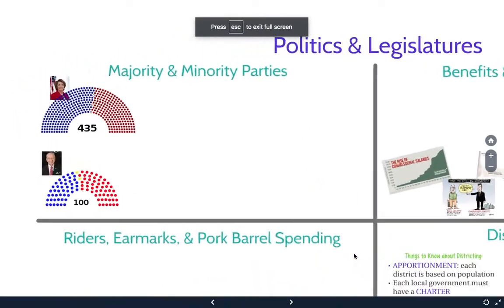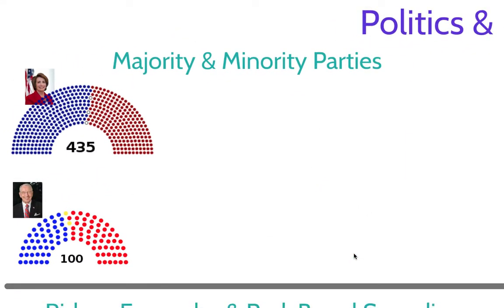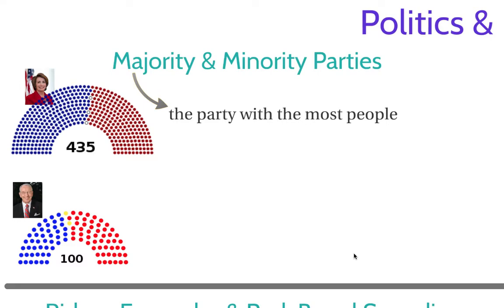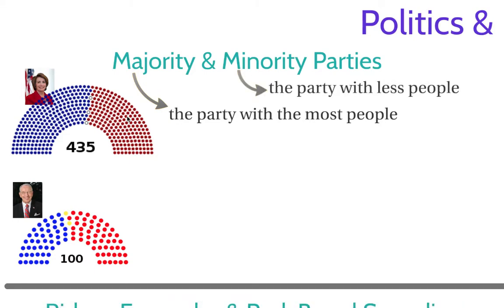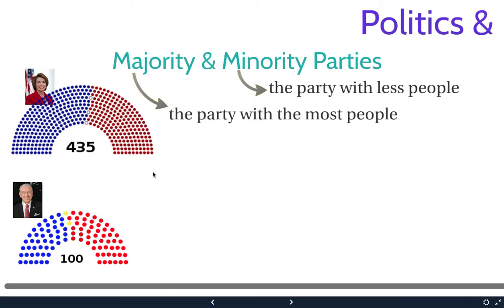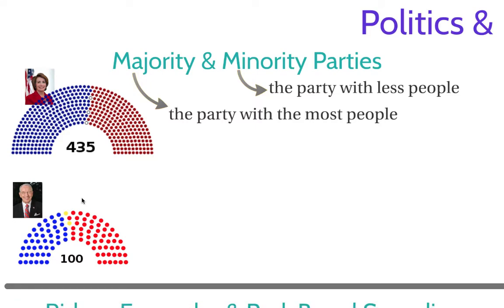First we have to talk about the majority and minority parties in Congress. The majority is the party with the most people in their respective house. For example, the House of Representatives is currently dominated by the Democrats, and the Republican Party would be the minority party. In the Senate, the Republicans are the majority party and Democrats are the minority party.